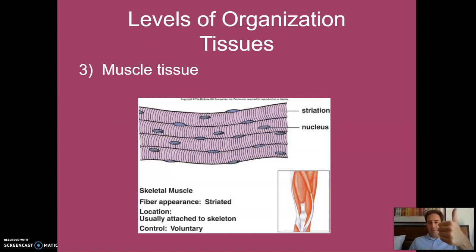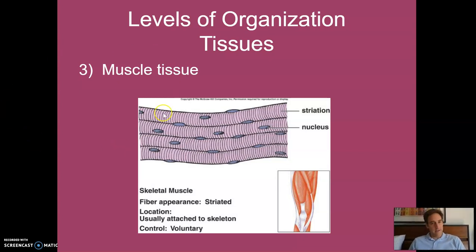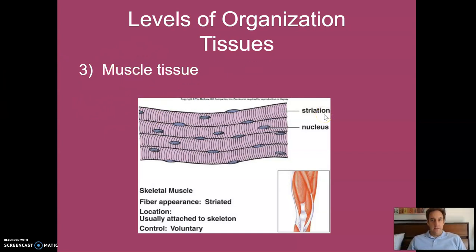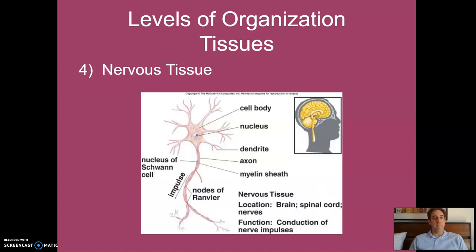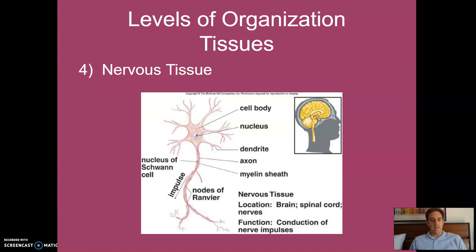So far we've talked about epithelial tissue and now connective tissue. A third type is muscle tissue — we're going to do a whole unit on muscles later, so for now we'll just mention it to be complete. The same with nervous tissue: it makes up your brain and spinal cord, and our next unit will look at it in much more detail.